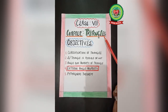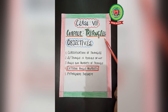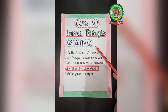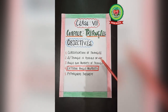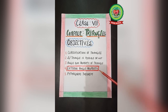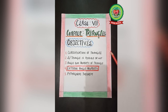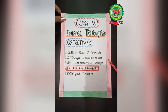Dear students, today we are going to start a new chapter — Triangles. The objectives of this chapter are: classification of triangles, whether a triangle is possible or not, angle sum property of a triangle, exterior angle property, and Pythagoras theorem. Today we will go through the first two objectives of this chapter, so let's move to the basic definition.